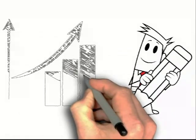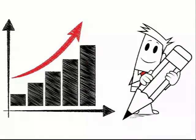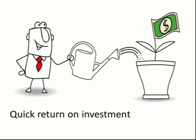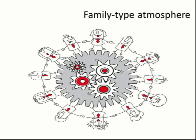Belongers want a franchise concept with historically proven systems that has credible management as well as strong support. They desire a business that is low-risk and has a quick return on investment. A company with a family-type atmosphere in an industry with stability would be a good fit.